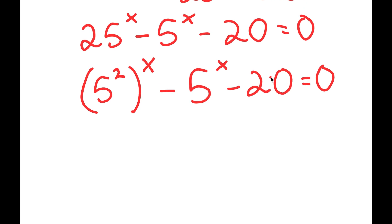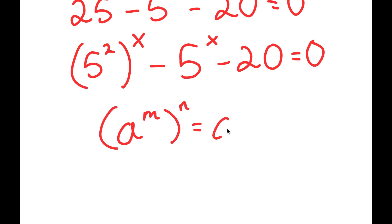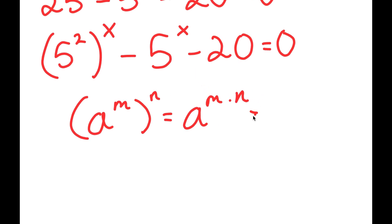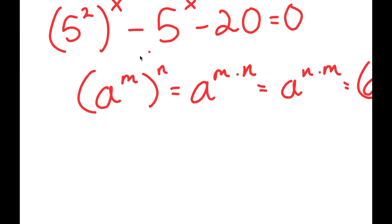And now from here, if I have something in the form a to the power of m to the power of n, this is the same thing as a to the power of m times n. And since a^(mn) equals a^(nm), we can also write it as a to the power of n to the power of m. So 5 to the power of 2 to the power of x equals 5 to the power of x to the power of 2.